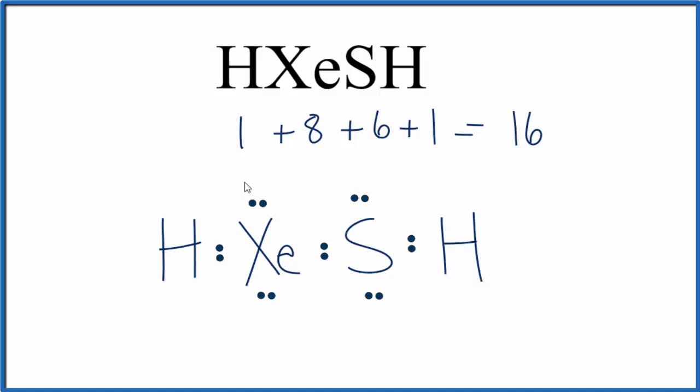Sulfur, 8, and then xenon has 8 as well. But we have these two valence electrons left over and it doesn't seem like we have anywhere to put them.